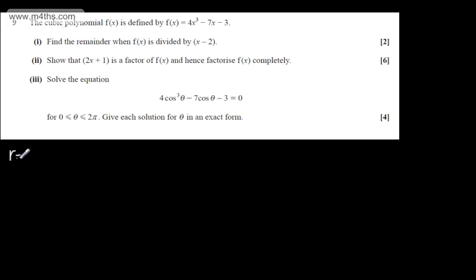We can simply write the remainder will be equal to f(2). I'm going to evaluate through the function x equals 2. So r equals 4 lots of 2 cubed, which is 8, minus 7 lots of 2 to the power of 1, which is 2, minus 3. So the remainder will be 32 minus 14 minus 3. The remainder is 32 minus 17, that gives me 15.